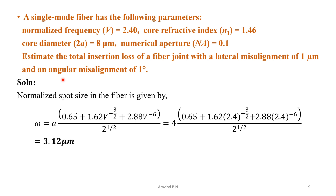Let us go through a problem related to it. A single mode fiber has the following parameters: normalized frequency V = 2.40, core refractive index n1 = 1.46, core diameter 2a = 8 micrometers, numerical aperture NA = 0.1. Estimate the total insertion loss of a fiber joint with a lateral misalignment of 1 micrometer and an angular misalignment of 1 degree.